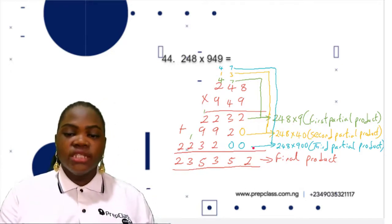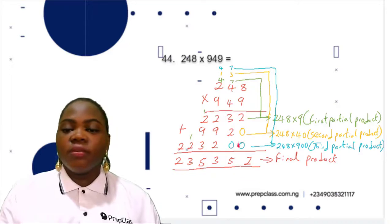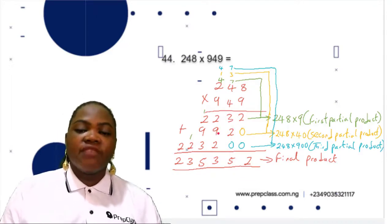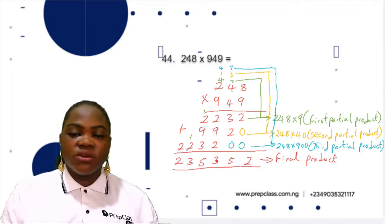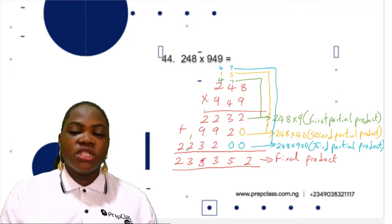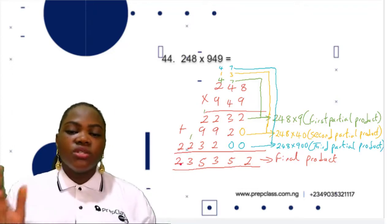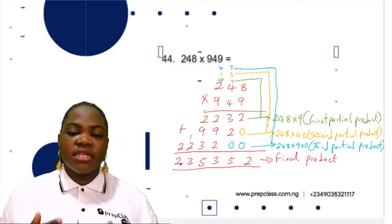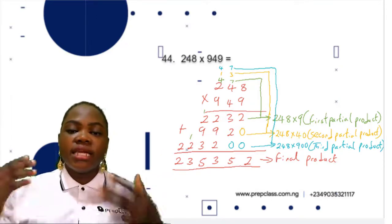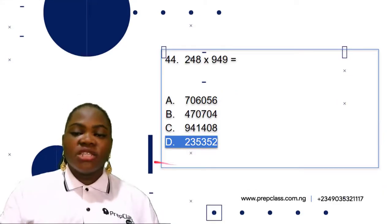Now let's add the first, second, and third partial products together to get the final product. 2 plus 0 plus 0 is 2. 3 plus 2 is 5. 2 plus 9 is 11, 11 plus 3 is 13, write 3 carry 1. 1 plus 2 is 3, 3 plus 9 is 12, 12 plus 3 is 15, write 5 carry 1. 1 plus 2 is 3, then 2 is 2. The answer is 235,322. The product of 248 and 949 is 235,322. The correct option is option D, 235,322.